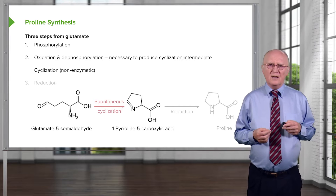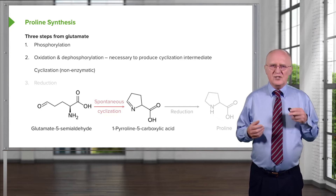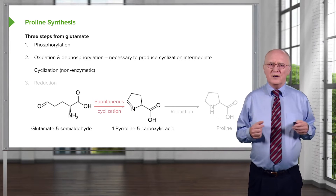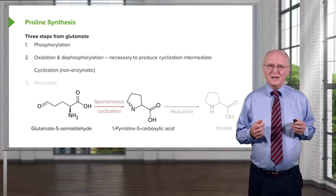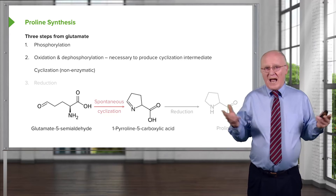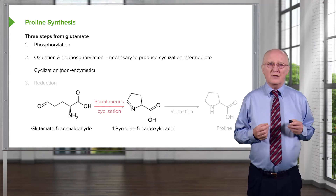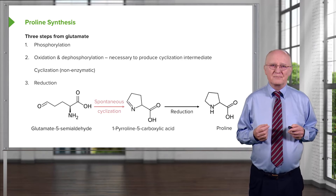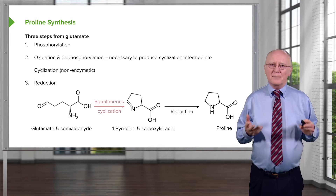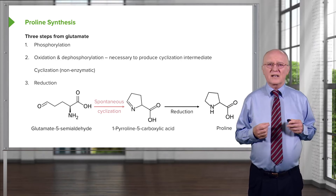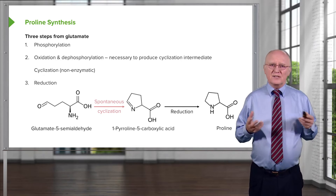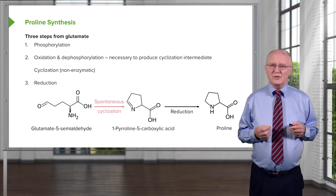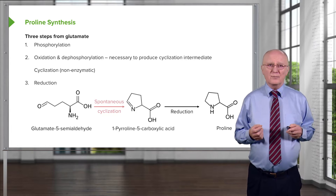The cyclization of glutamate 5-semialdehyde is spontaneous and does not require an enzyme. We can see that cyclization happening to make 1-pyrroline-5-carboxylic acid. Cyclization happens without any other thing being present in the reaction. In the last step, that 1-pyrroline-5-carboxylic acid gets reduced, and that reduction produces the amino acid proline.